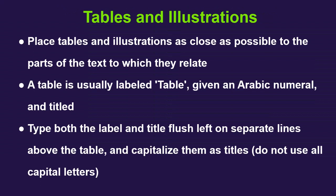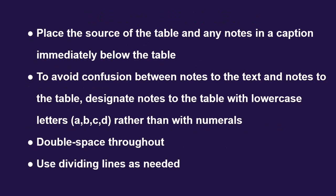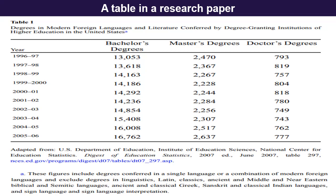The next one is tables and illustrations. Place tables and illustrations as close as possible to the parts of the text to which they relate. A table is usually labeled 'Table,' given an Arabic numeral, and titled. Type both the label and title flush left on separate lines above the table and capitalize them as titles — do not use all capital letters. Place the source of the table and any notes in a caption immediately below the table. To avoid confusion, designate notes to the table with lowercase letters rather than numerals. Double space throughout; use dividing lines as needed. A table in a research paper should look like this picture.